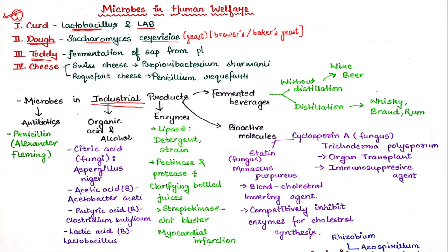There is also a special fermented drink made from dough — a toddy drink that people consume during celebrations. Next is your cheese. There is Swiss cheese and Roquefort cheese. In Swiss cheese, you get to see a bacterium called Propionibacterium sharmanii.